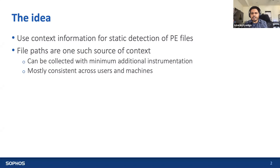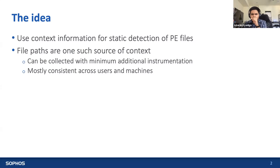The basic idea behind this research is that context information related to a PE file that is not inherently benign or malicious can be used to improve the performance of an ML-based static detector. Framing the content of a PE file in the right context can provide additional information to the model, reduce false positives, and improve the detection rate. Context information can be anything not inferable from the file itself — such as how and where the file was created, whether it was written by a process, downloaded from the internet, or created by a user. One of the easiest and most consistent sources of context is the location of the file in the file system, as collecting file paths requires minimal additional endpoint instrumentation. In this work, we use file paths as a proof-of-concept source of context information, along with features extracted from the file content.